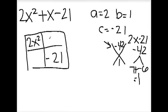So the next step is to write the factors of negative 42 into the box. So 7x will go in the top right corner, and negative 6 will go in the bottom left corner.